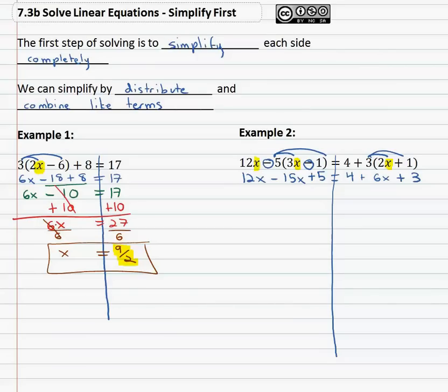There still is more simplifying to do on each side. On the left side we've got 12x minus 15x that's negative 3x and plus 5 combining like terms equals. On the right side we've got 4 and 3 as like terms that's 7 plus the 6x.